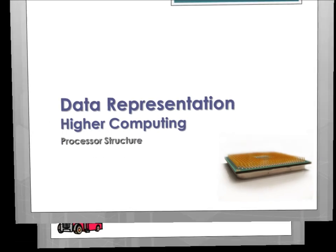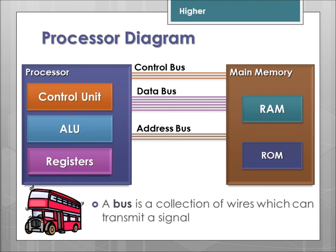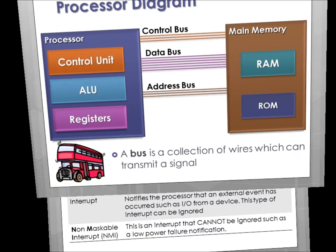Higher content — the structure in a bit more detail. We are going to mention three buses: the control bus, the data bus, and the address bus. They basically link the processor and main memory, and also peripherals. A bus is just a collection of wires which can transmit a signal.